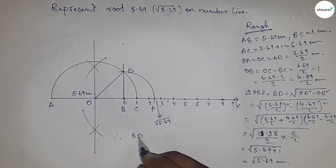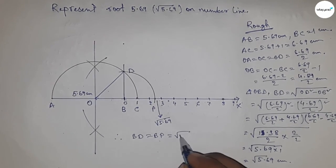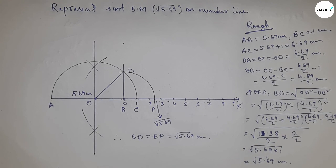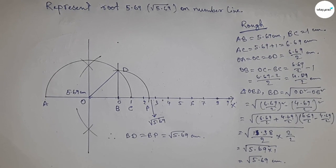Therefore distance BD and BP are equal to root 5.69 centimeter. That's all. Thanks for watching, please subscribe, like, and comment on my video. Thanks for watching.